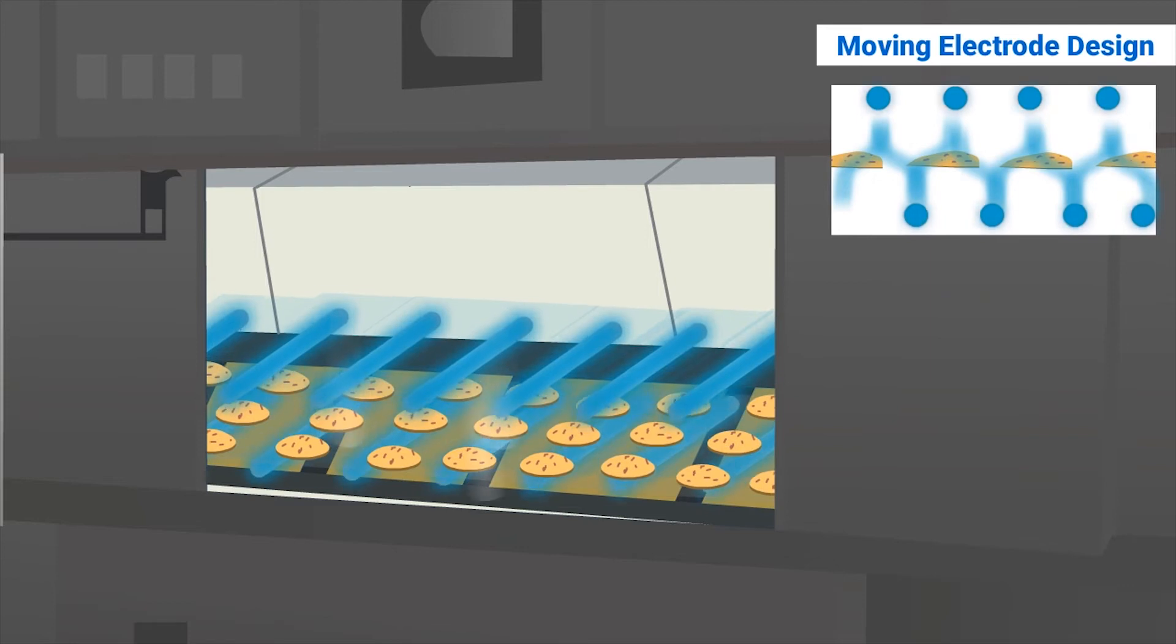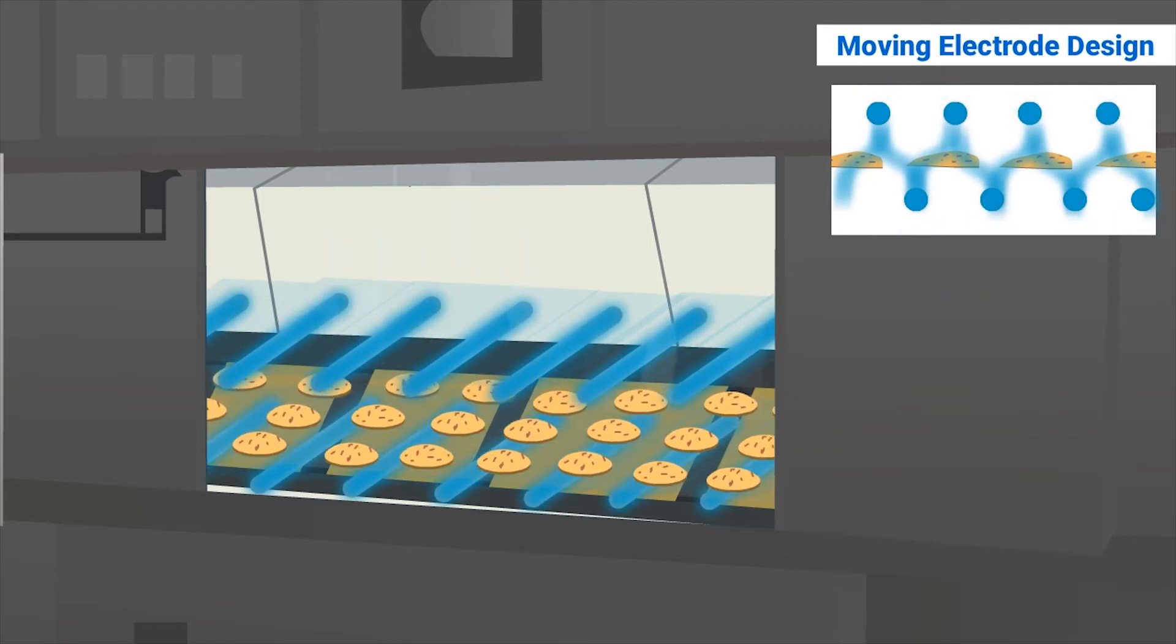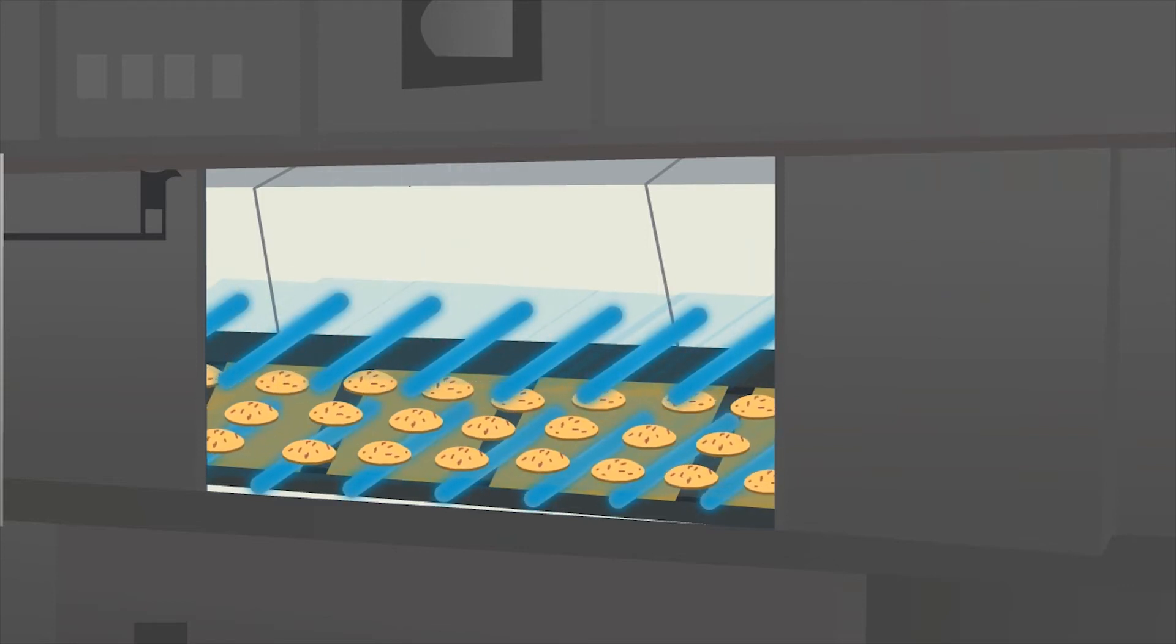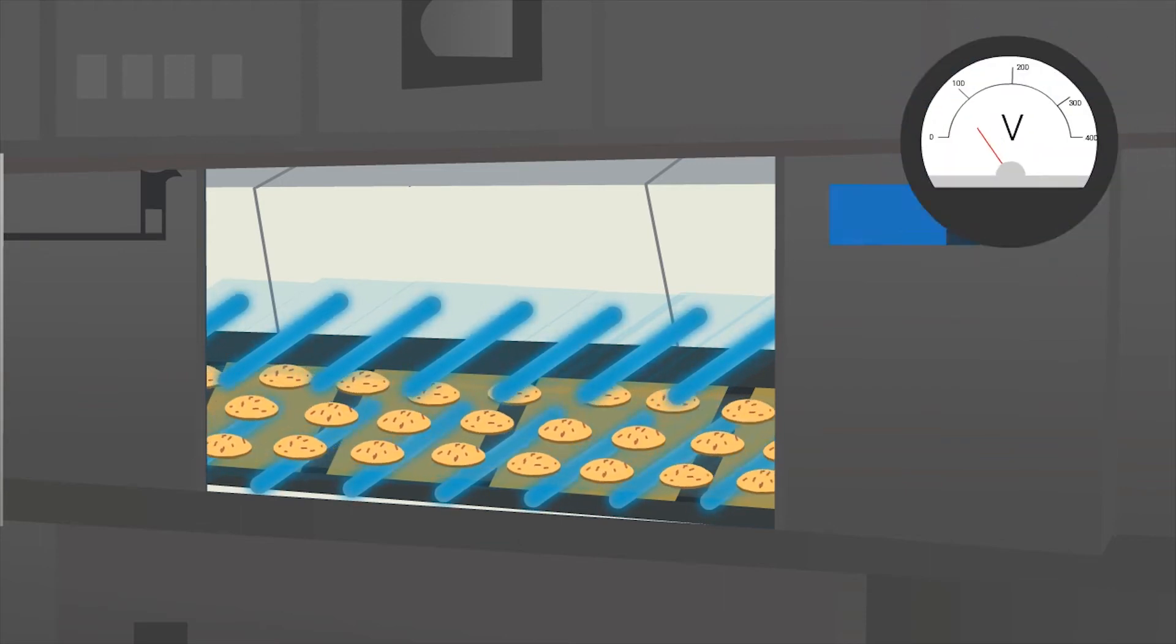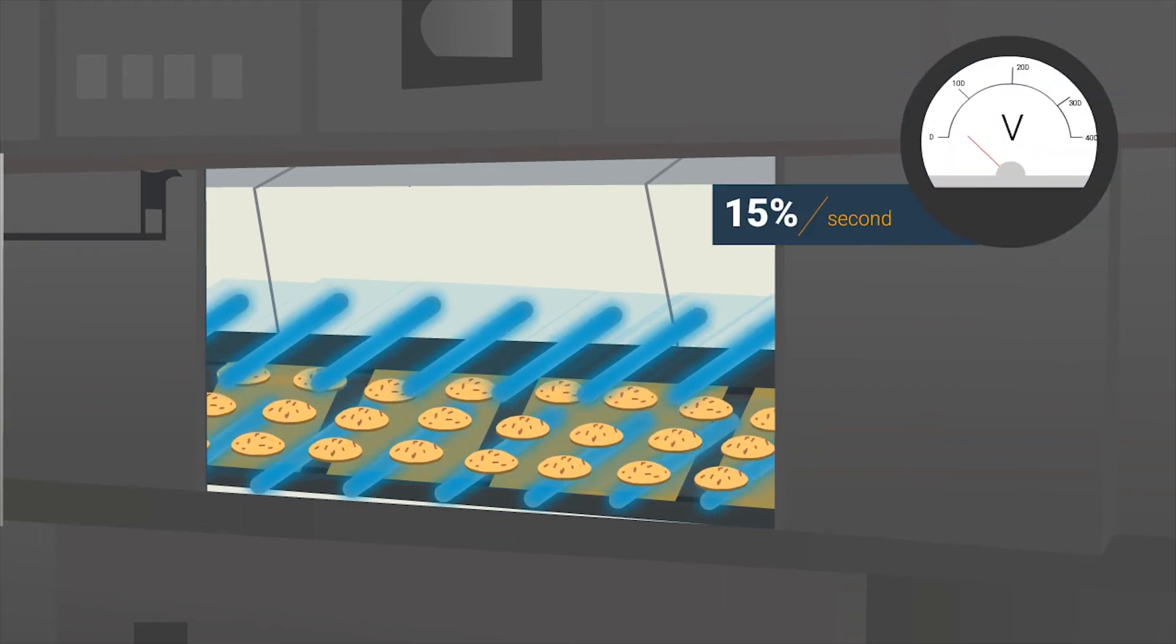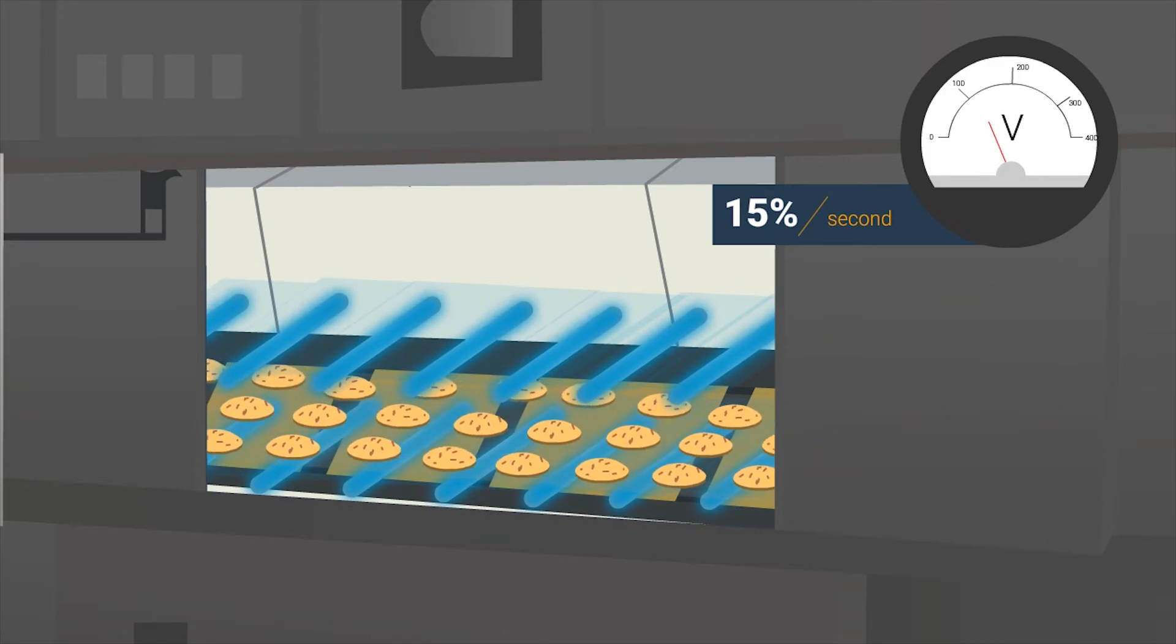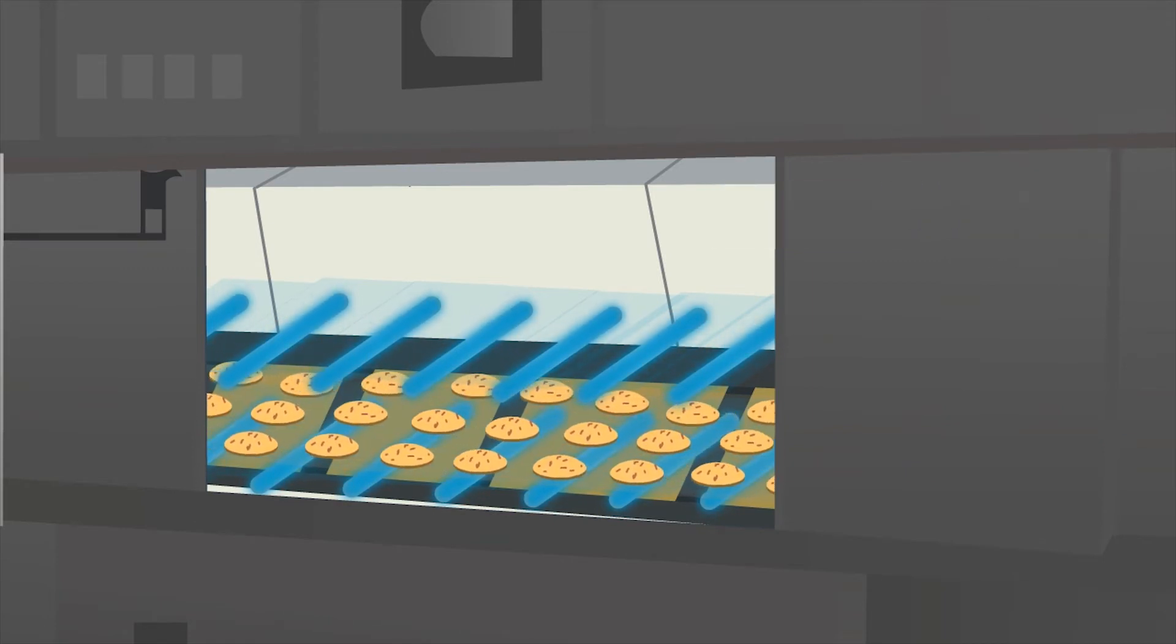Strayfield's moving electrode design provides fast response to moisture variation and efficiency of operation that fixed electrode systems cannot match. Power can be varied at a rate of 15% per second or better, to account for variation in input moisture levels.